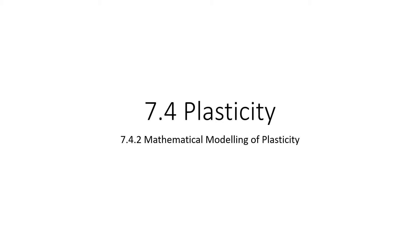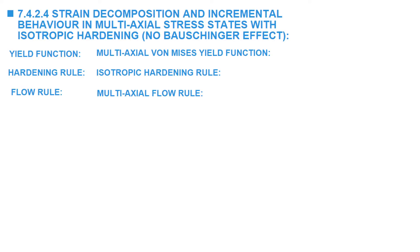In this video, we are going to extend the three ingredients of the uniaxial plasticity model described in the previous video to three-dimensional loading. The plasticity model described here is termed the von Mises or J2 isotropic hardening plasticity model. The three ingredients are the yield function, here called the multi-axial von Mises yield function, the hardening rule, and the flow rule.